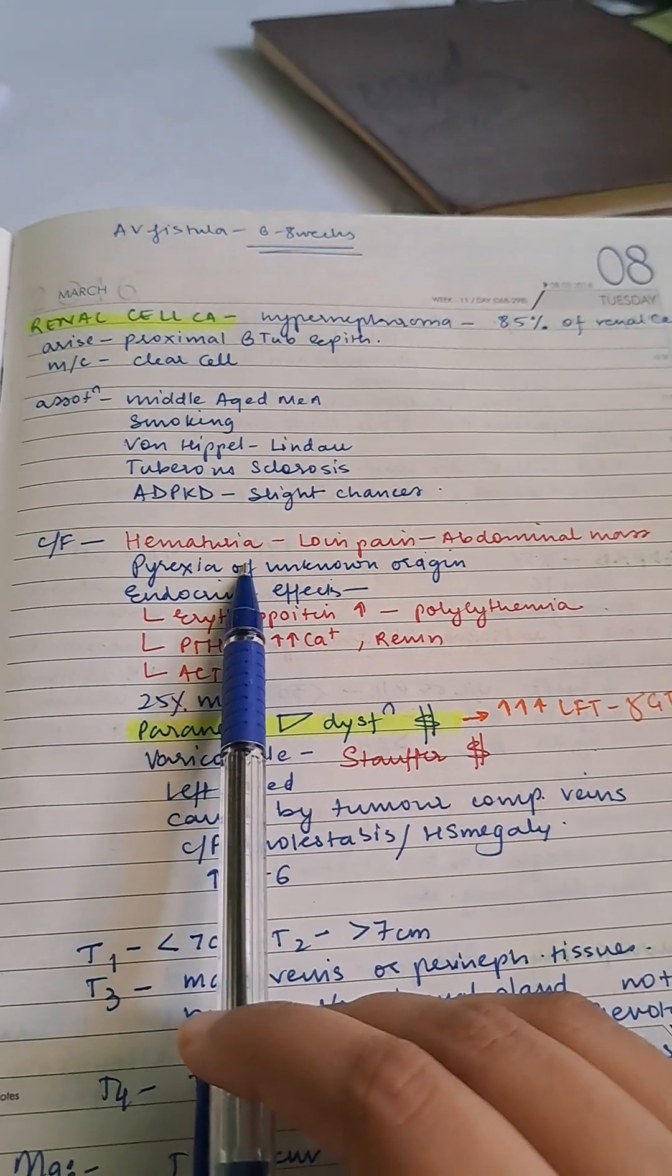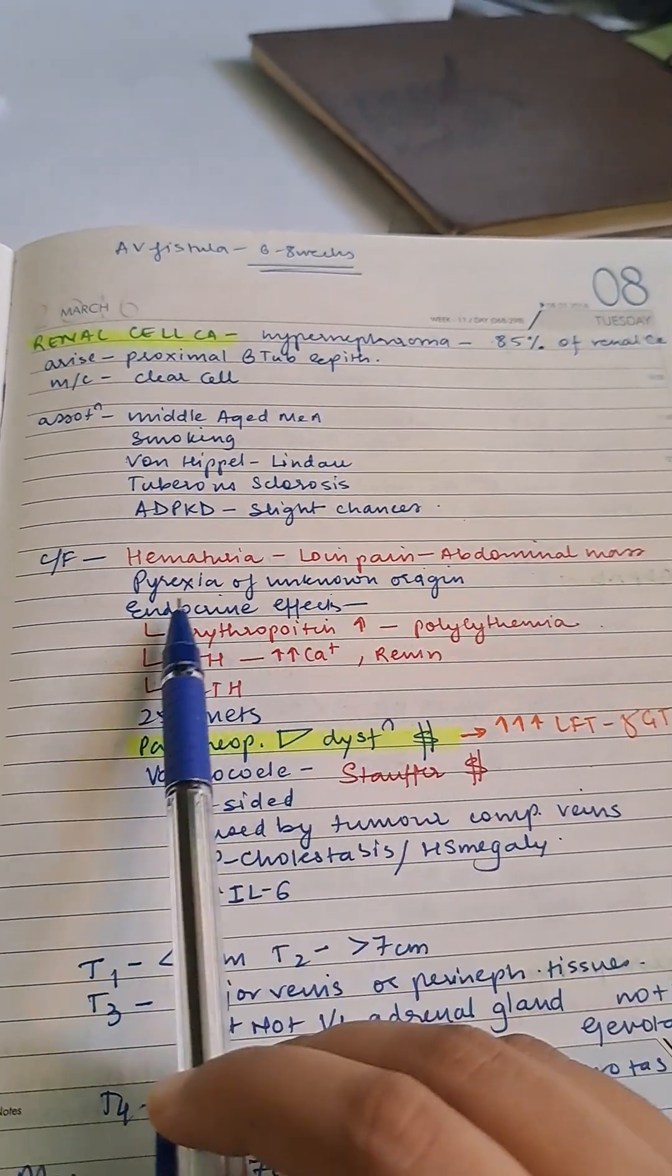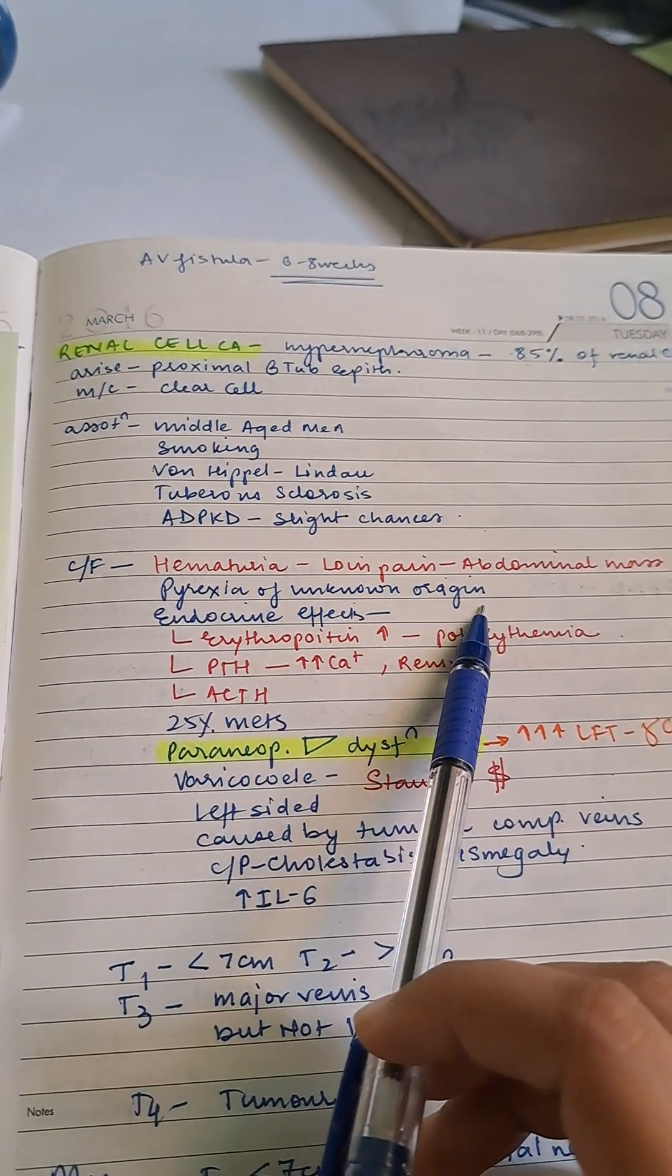Clinical features include hematuria, loin pain, abdominal mass, and pyrexia of unknown origin.